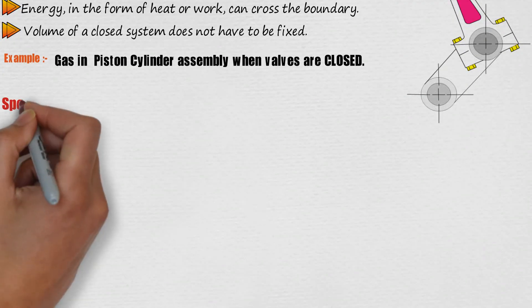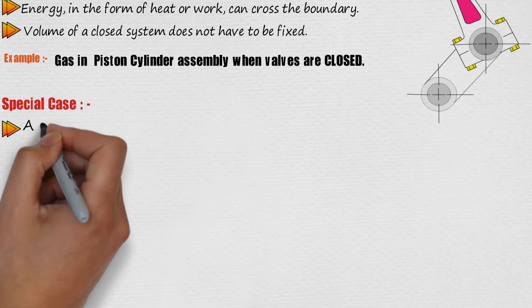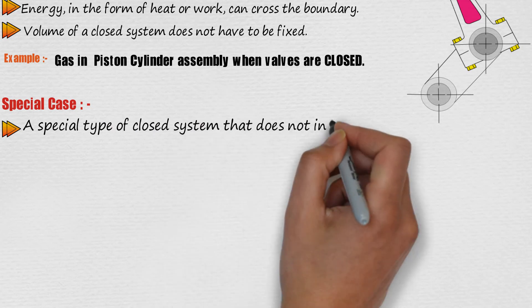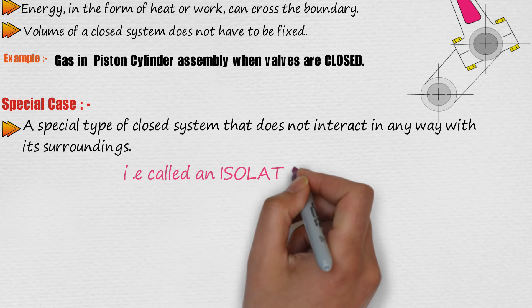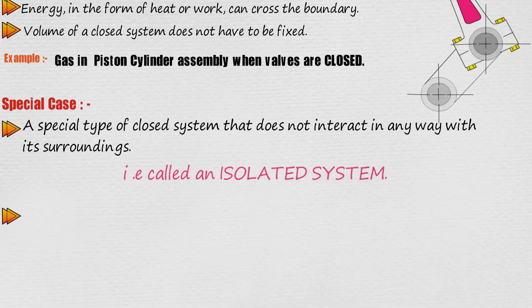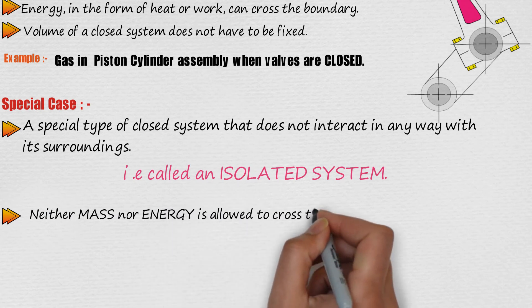Special case of closed system. A special type of closed system, that does not interact in any way with its surroundings, is called an isolated system. Neither mass nor energy can cross its boundary.